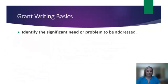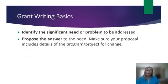Let's get started with grant writing basics. Your first step, and likely the easiest, is to identify the significant need or problem to be addressed. For example, improving the understanding of disease diagnosis and treatment options for patients and caregivers. Next, you'll propose the answer to the need, and make sure your proposal includes details of the program or project for change. For example, the organization will partner with healthcare providers to provide education programs that will enhance patient and caregiver knowledge on diagnosis and treatment of the disease.